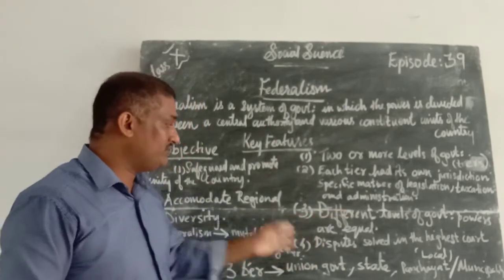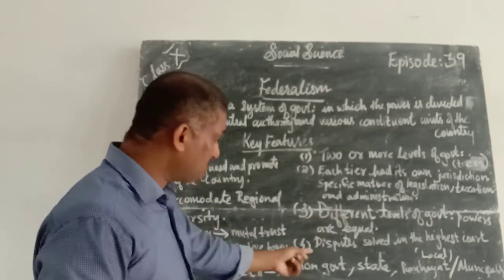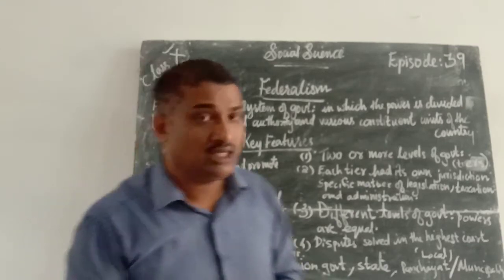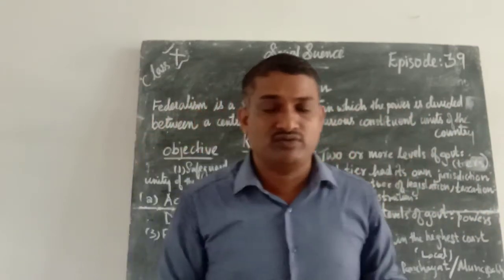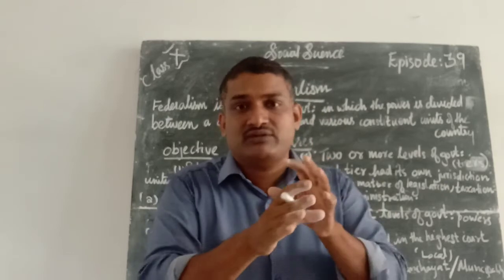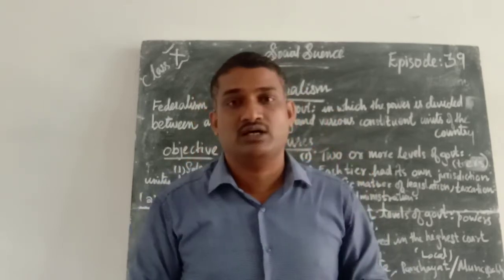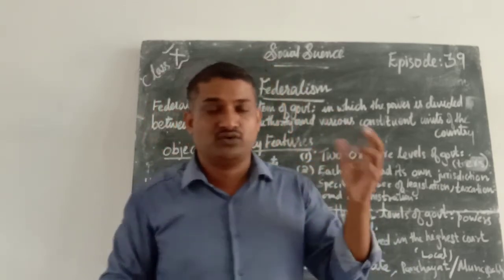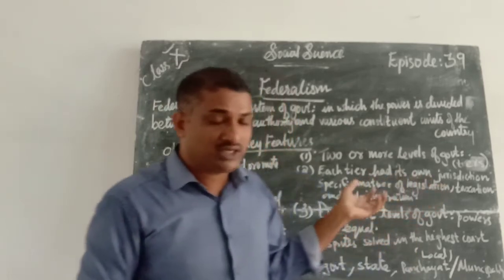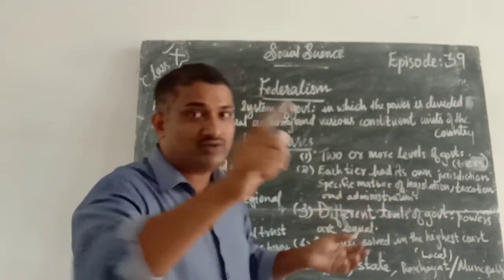The different levels of government powers are equal. Next: disputes are settled in the highest court. In a democratic, federal form of government, disputes may occur. India is a sovereign, socialist, secular, democratic form of government. In this form of government — the biggest democratic form of government — no quarrels, no fights, no disputes will happen in our society. But definitely disputes may happen.